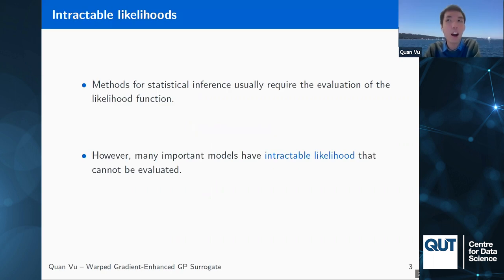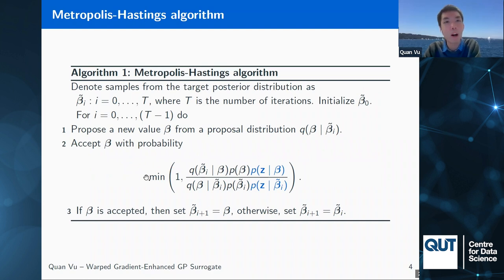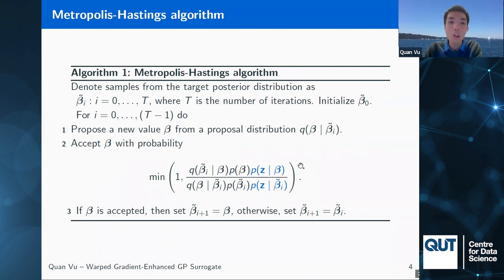Usually when we do statistical inference we need to be able to evaluate the likelihood function. However, this is not always the case for many important models. Here is an example of an MCMC algorithm — the Metropolis-Hastings algorithm. This is an accept-reject algorithm where we first sample from a proposal distribution and then calculate a ratio to either accept or reject the proposal. In this ratio, we need to evaluate our likelihood function.